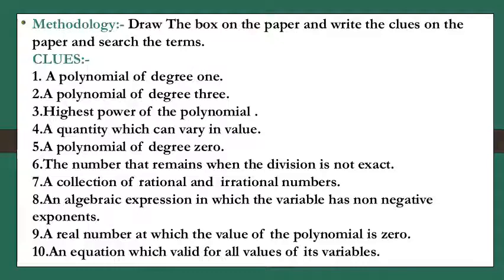Seventh: a collection of rational and irrational numbers. Eighth: an algebraic expression in which the variable has non-negative exponents. Ninth: a real number at which the value of the polynomial is zero. Tenth: an equation which is valid for all values of its variables.